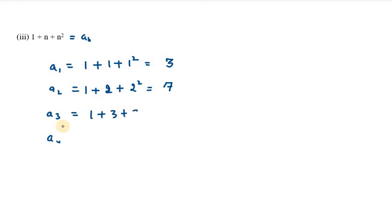Next is a3, which is 1 plus 3 plus 3 square. 1 plus 3 is 4, 3 square is 9, 4 plus 9 is 13. a4 is 1 plus 4 plus 4 square. 1 plus 4 is 5, 5 plus 16 is 21. Now we need to check whether it is forming an A.P. or not.